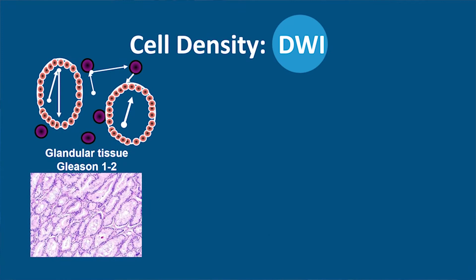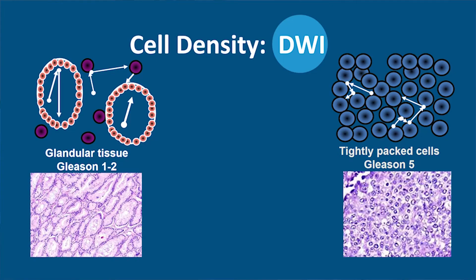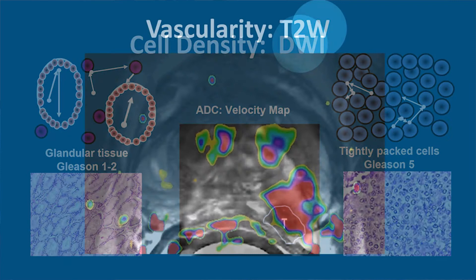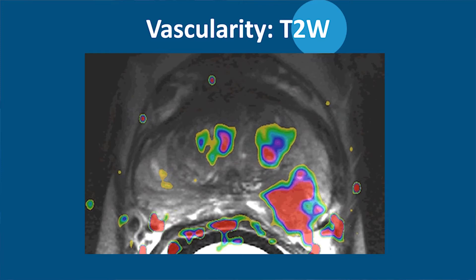You can display the motion of water molecules between the cells. When there is a large freedom of motion — that means low cell density, for example a Gleason 1 or 2 grade — there is high velocity. Whereas with tightly packed cells, like Gleason 5, there is no motion for the water molecules, and this means low velocity. The ADC map — the apparent diffusion coefficient map — shows this water velocity. Low velocity and high cell density appears black; high velocity appears white. So black is not good. Black means a Gleason grade 5 or 4 component.